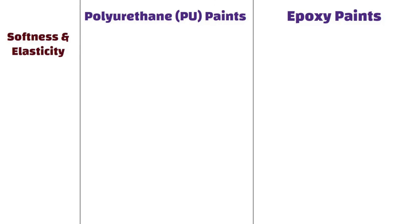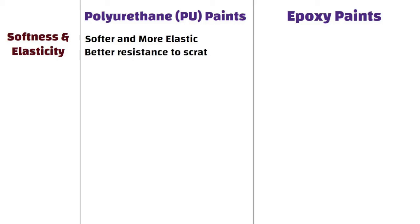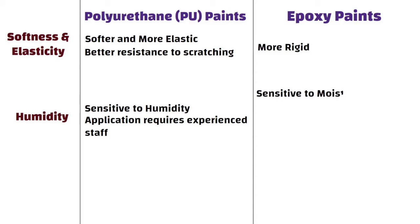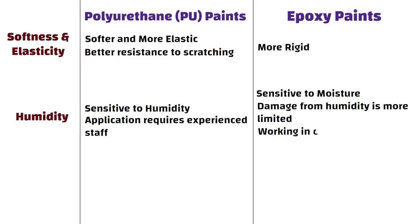Softness and elasticity. Polyurethane is generally softer and more elastic than epoxy, offering better resistance to scratching. In contrast, epoxy is more rigid. Humidity. PU floors are sensitive to humidity and application requires experienced staff. Whereas epoxy is also sensitive to moisture, but damage from humidity is more limited. Epoxy is a better choice when working in environments where humidity could be an issue.